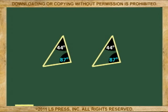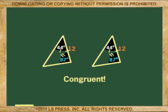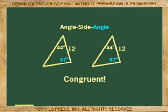If we determine that two pairs of corresponding angles are equal, and that the sides in between the angles are also equal, we can say that the triangles are congruent, without considering the other sides or angles. This congruency is called angle-side-angle, or ASA for short.